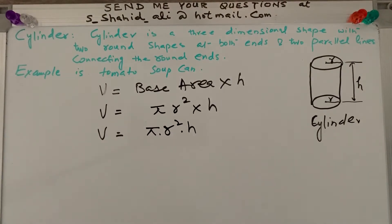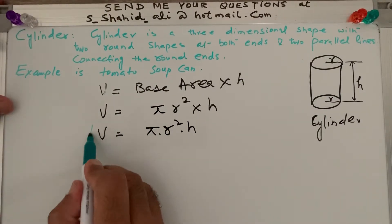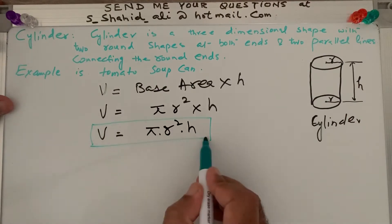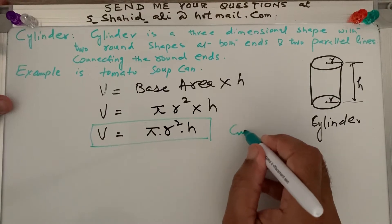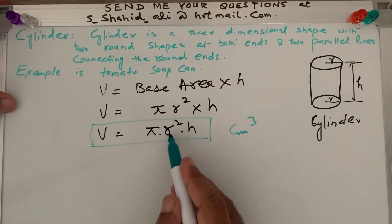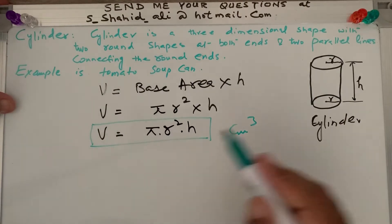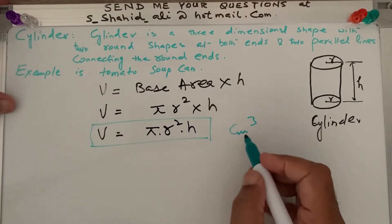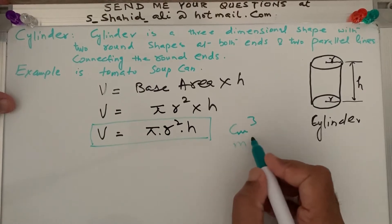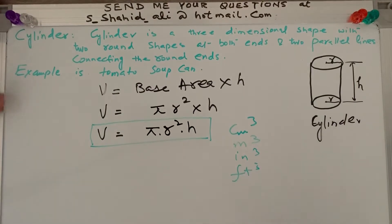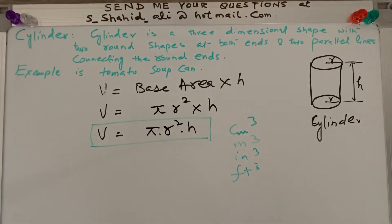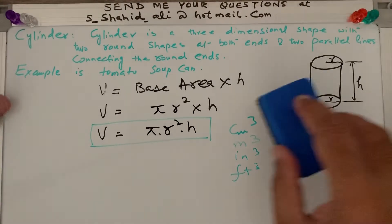Remember this formula: volume of a cylinder equals pi r squared h. The unit will be cubic — if height is in centimeters, then r squared is centimeters squared times the third dimension height, giving centimeters cubed. If given in meters, it's meters cubed; in inches, inches cubed; in feet, feet cubed, because a third dimension is involved.